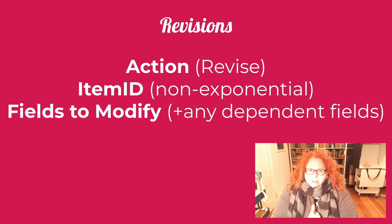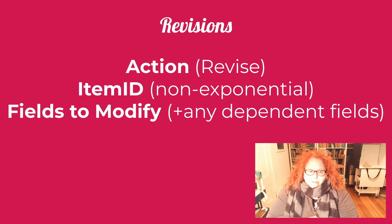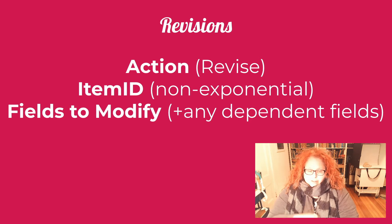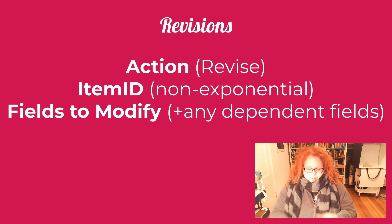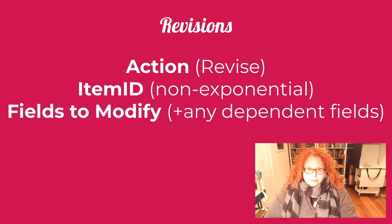For the item ID, I'll talk about how you get that in a minute, but you want to make sure it's a normal number, not an exponent, and I'll explain why that's even an issue shortly. For the fields to modify, just make sure that if there are any dependent fields, you have those as well. For example, if you want to change the amount at which you'll accept an offer, make sure you also have the field that turns offers on, or any other dependent situation — a lot of them have to do with shipping. That's all you need in your CSV file.